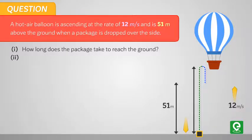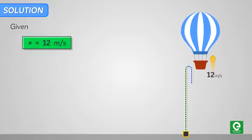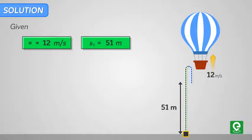Second part: with what speed does it hit the ground? Solution: we are given that the initial velocity of the balloon is 12 meters per second, and the height of the balloon above the ground when the package is dropped, h1, is equal to 51 meters.